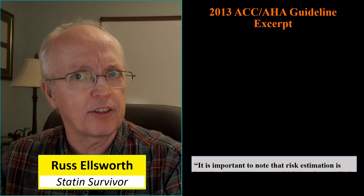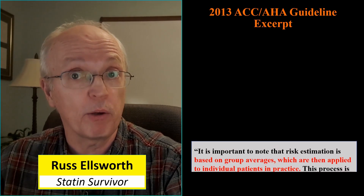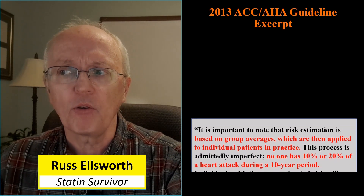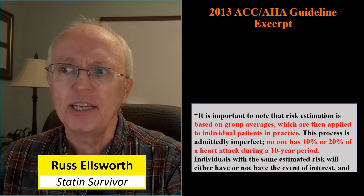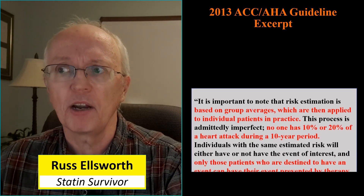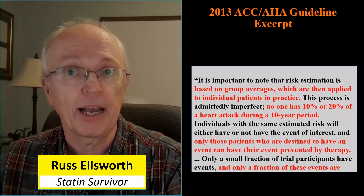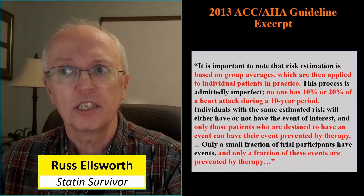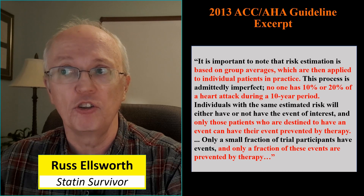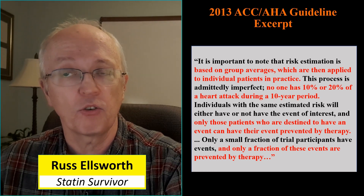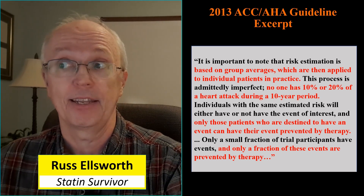These pooled cohort equations were rolled out in 2013 in a guideline, and here's an excerpt from that guideline. It's important because there's a lot of philosophical discussion in there. It notes that risk estimation is based on group averages applied to individual patients in practice — admittedly imperfect. No one has 10% or 20% of a heart attack during a 10-year period — another thing I've been pointing out.